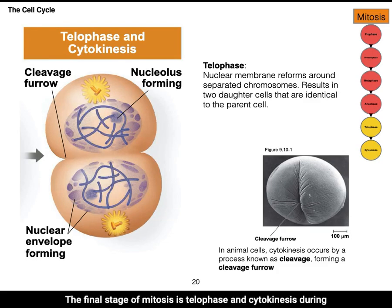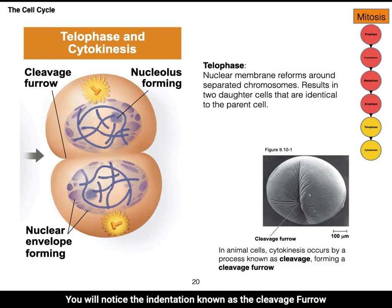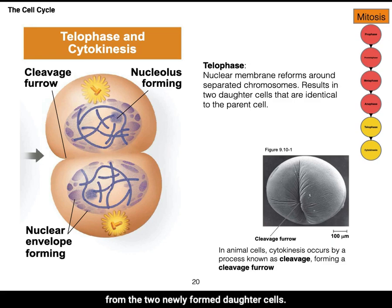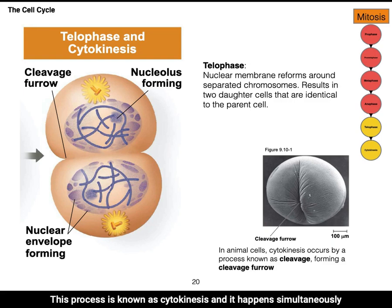The final stage of mitosis is telophase and cytokinesis. During telophase, the nuclear membrane reforms around the chromosomes. You will notice the indentation known as the cleavage furrow — in animal cells, the cleavage furrow functions to split the cytoplasm of the two newly formed daughter cells. This process is known as cytokinesis, and it happens simultaneously with telophase.